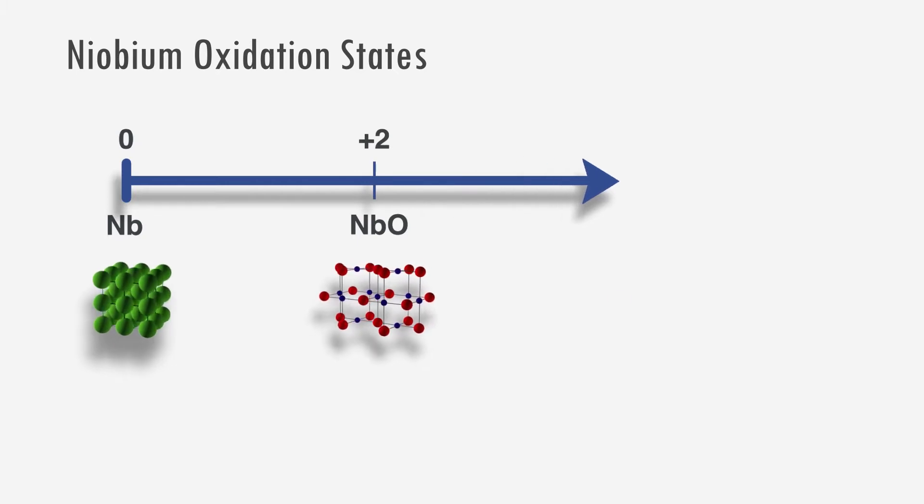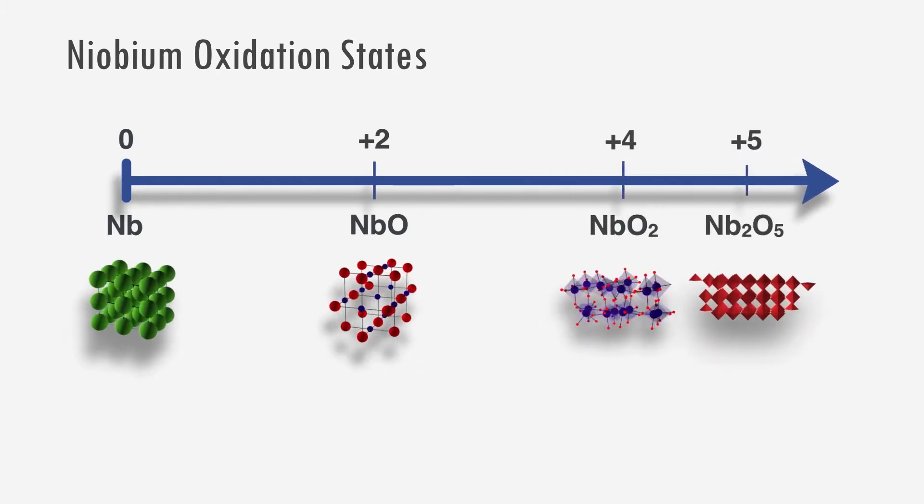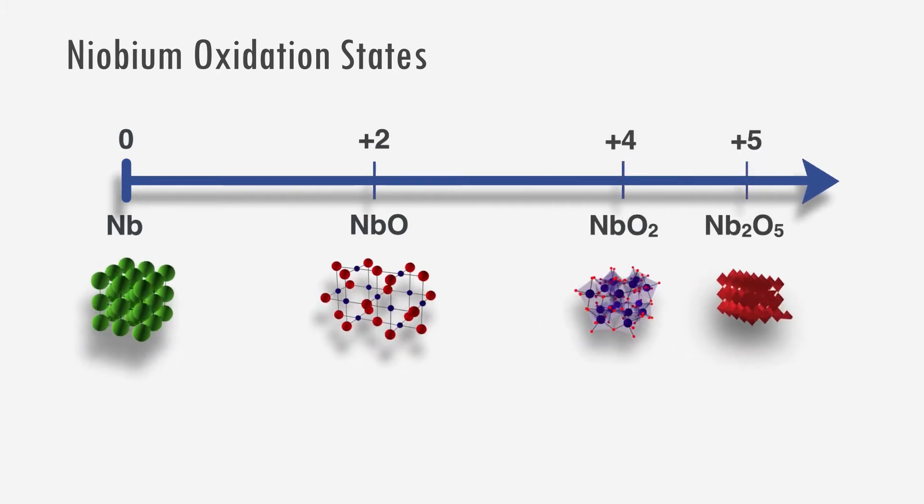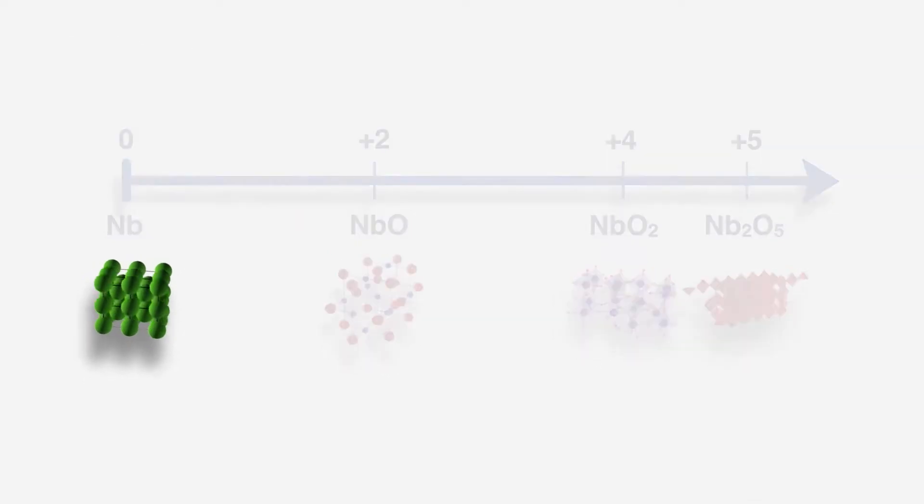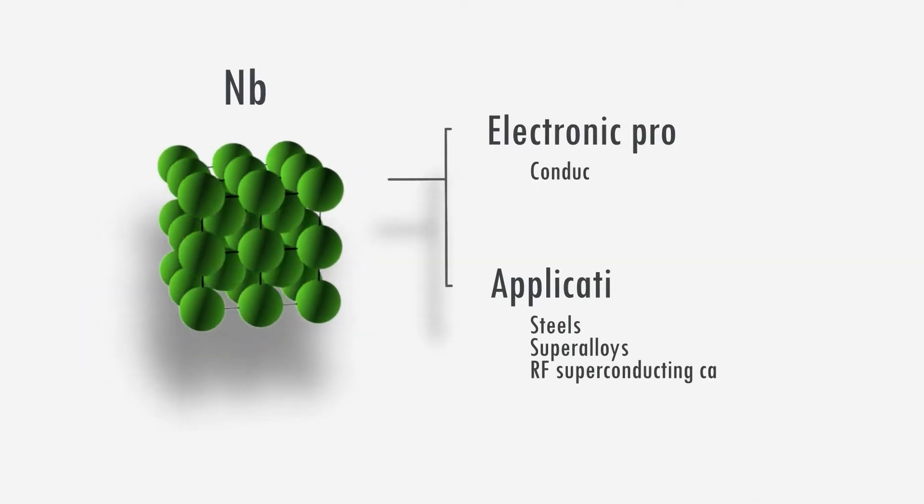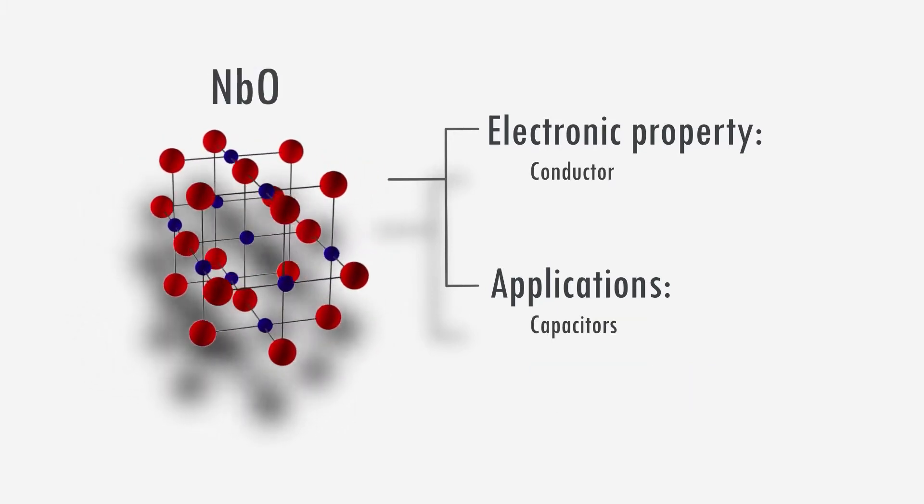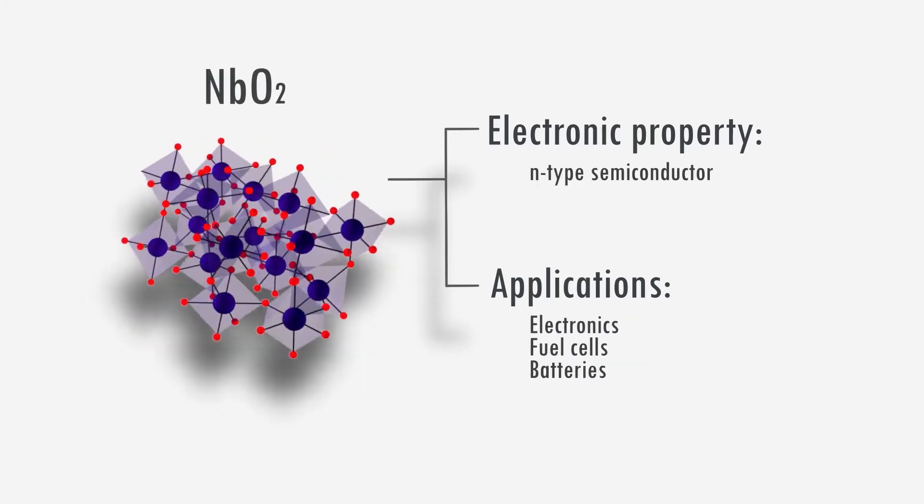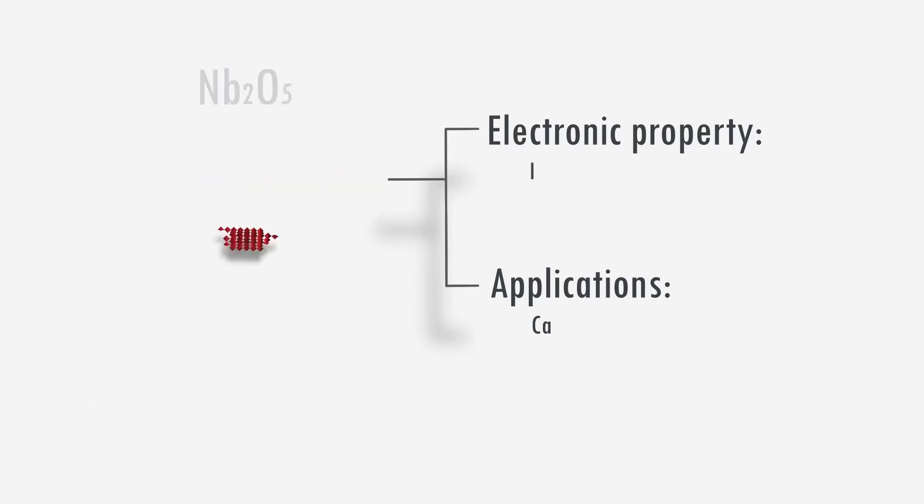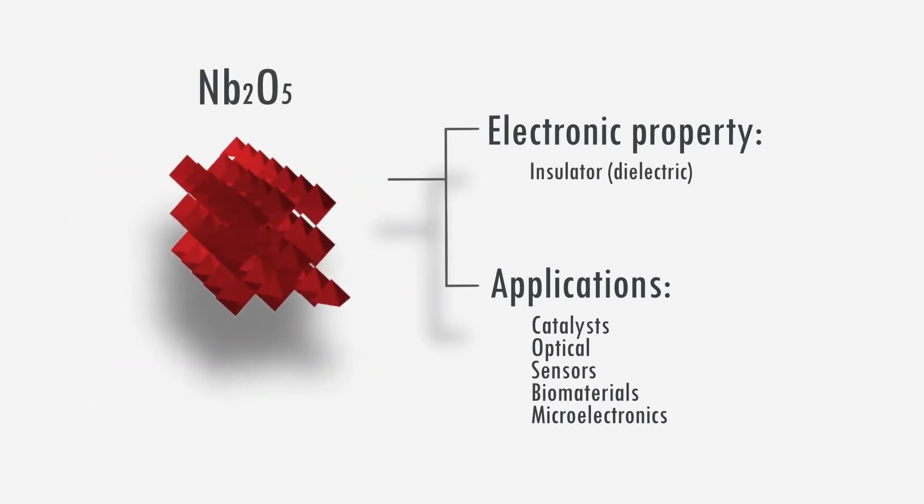Niobium is extremely versatile because of its redox chemistry, having a range of oxidation states up to plus 5. The oxides have different structures and electronic properties, enabling their strengths to be harnessed in a range of materials. This is particularly advantageous in energy-related applications.